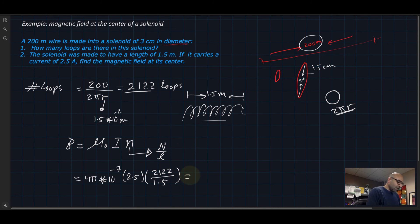We will find that the magnetic field at the center of the solenoid is 0.0044 Tesla.